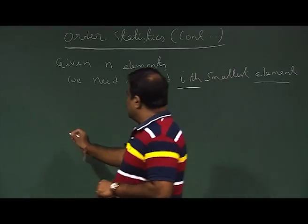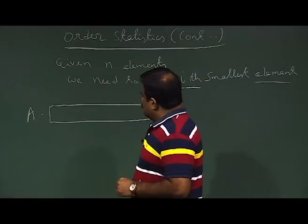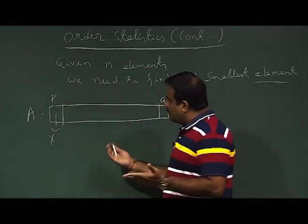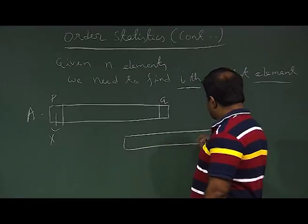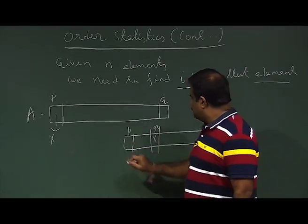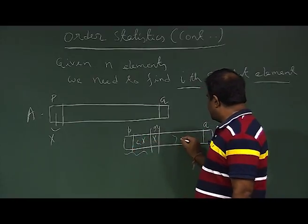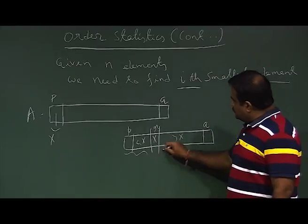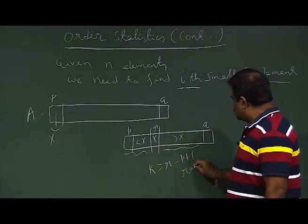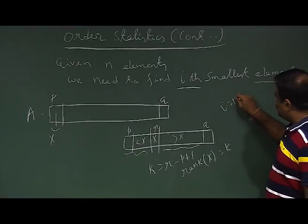We have a given array of numbers. We choose a pivot element x over the range p to q, and then we call partition. After partitioning, x will be sitting at some index r. All elements to the left are less than x, and all elements to the right are greater than x. If we choose k equal to r minus p plus 1, then k is basically the rank of x.